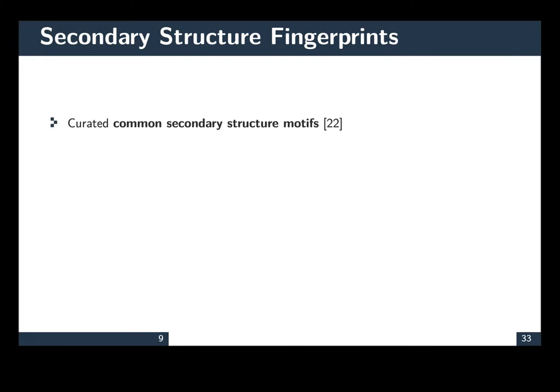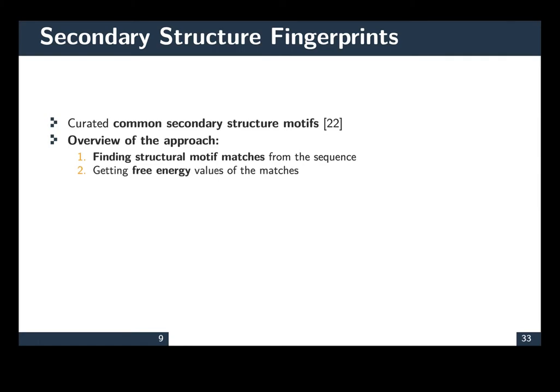In terms of secondary structure fingerprints, we use our own dataset, which was lifted from the literature. So, we have a repertoire of frequently occurring secondary structure motifs. In this approach, what we do is, each of the motif is matched against a sequence. We then calculate the free energy.